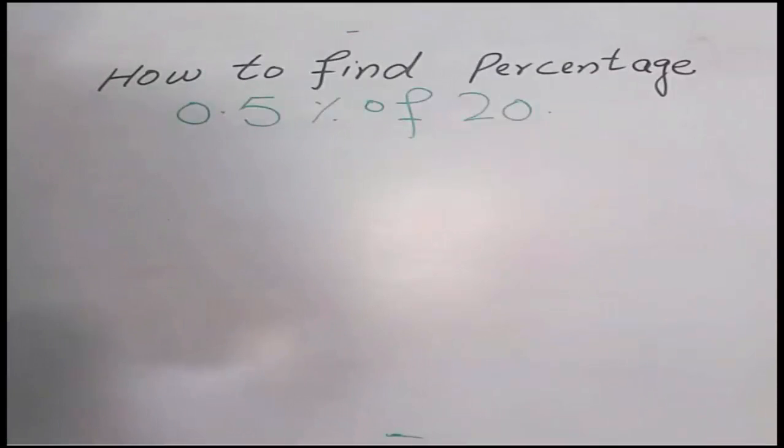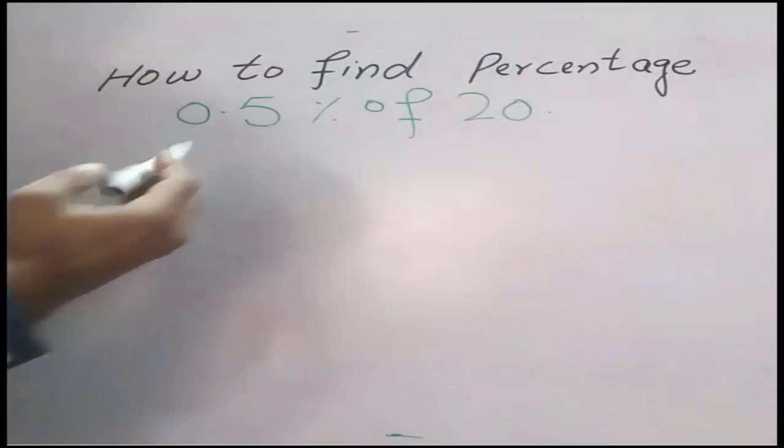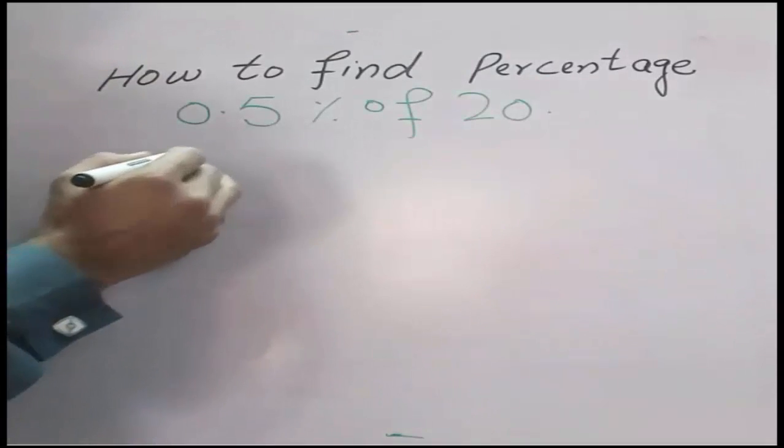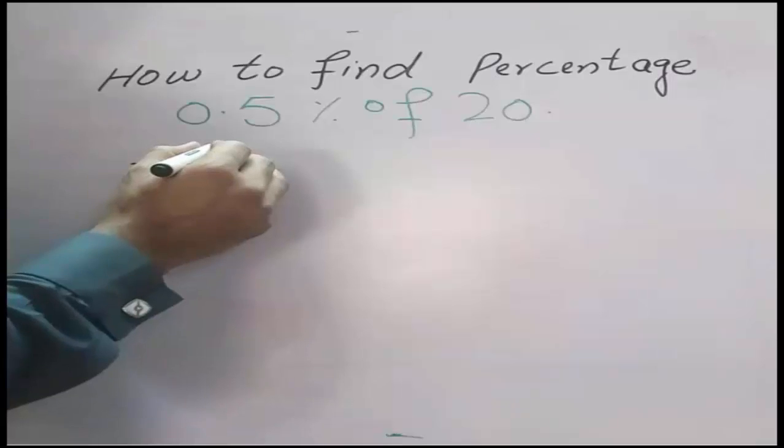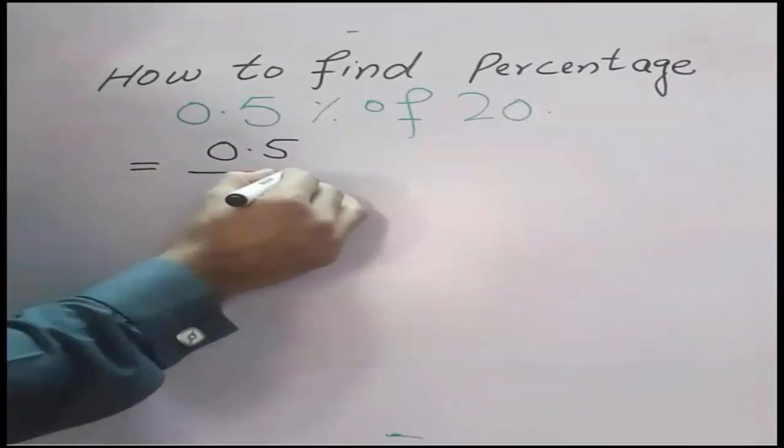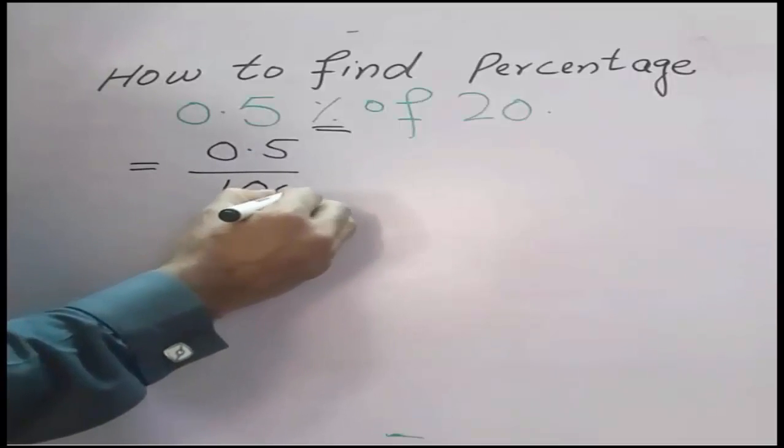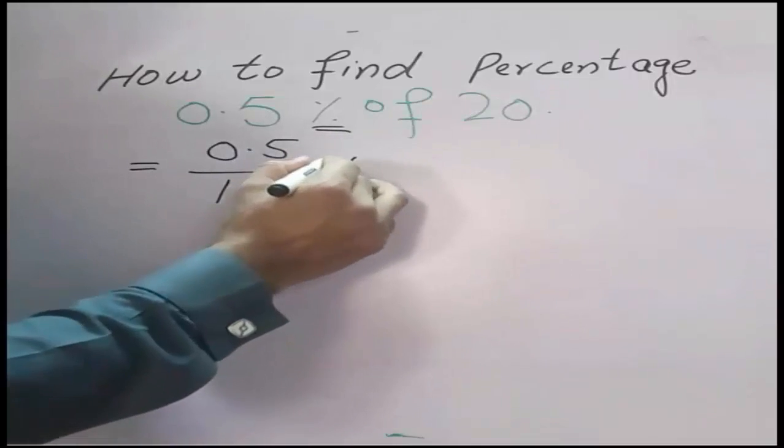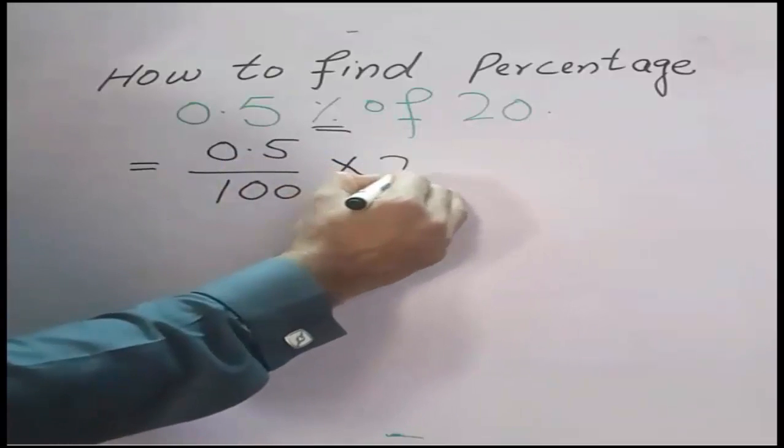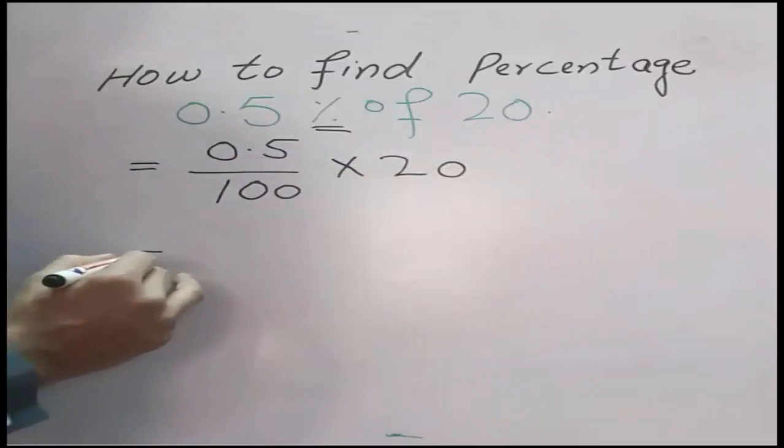The other example is find 0.5 percent of 20. Here we apply the same method: 0.5, remove this percentage sign, we will place 100 here and put the multiply sign times 20 here.